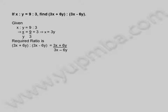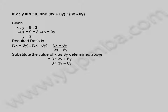The required ratio is 3x plus 6y is to 3x minus 6y, which equals 3x plus 6y divided by 3x minus 6y. Substituting x equals 3y: 3 into 3y plus 6y divided by 3 into 3y minus 6y, equals 9y plus 6y divided by 9y minus 6y, equals 15y by 3y, equals 5 by 1. So 3x plus 6y is to 3x minus 6y is equal to 5 is to 1.